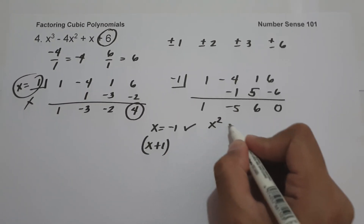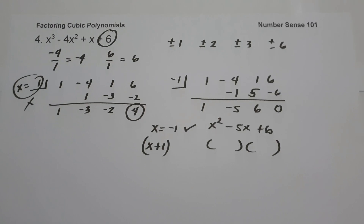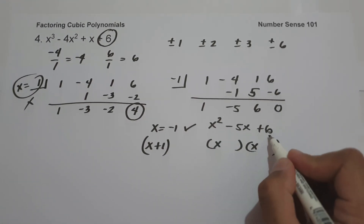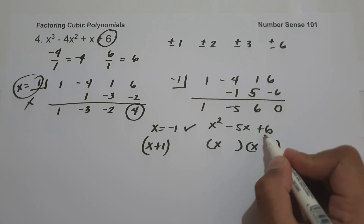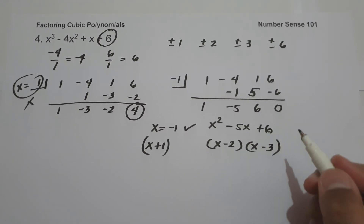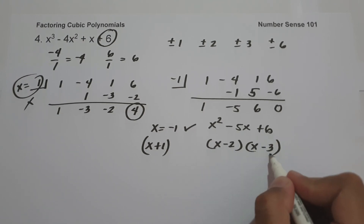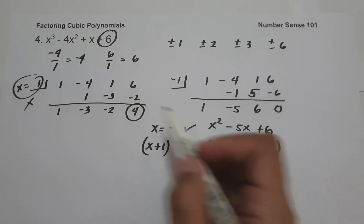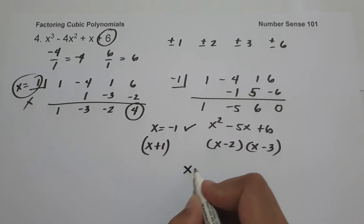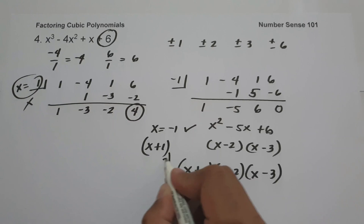To find the other factors, we use x squared minus 5x plus 6. The factors of x squared are x and x. We need two numbers that multiply to positive 6 and add to negative 5 — that is negative 2 and negative 3. Negative 2 times negative 3 is positive 6, and negative 2 plus negative 3 is negative 5. So the factors of x cubed minus 4x squared plus x plus 6 are x plus 1, x minus 2, and x minus 3.